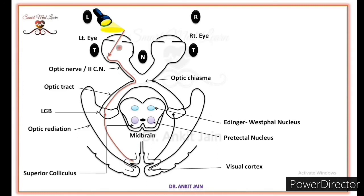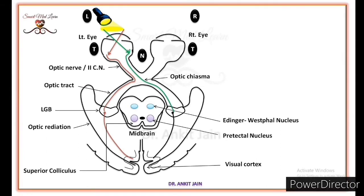Similarly, the visual impulse coming from the nasal side of the retina of the left eye travels through the left optic nerve. After crossing at the optic chiasma, this visual information travels through the right optic tract and reaches the right lateral geniculate body. From here, some visual information reaches the right visual cortex through the optic radiation.